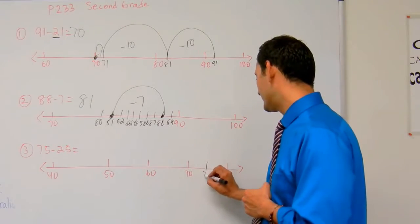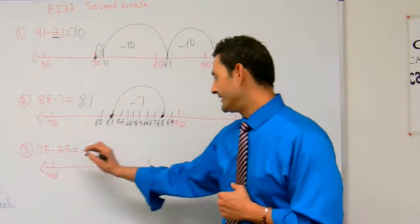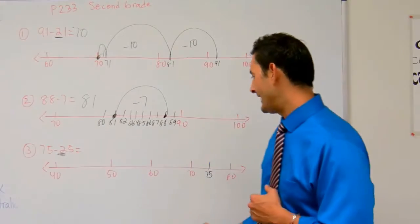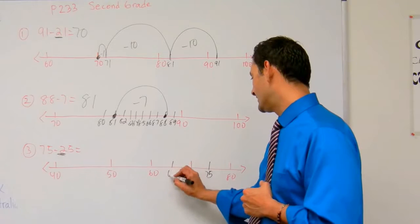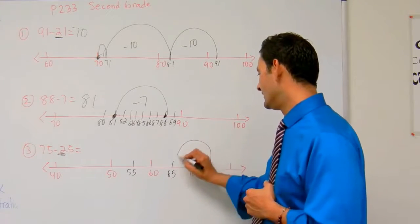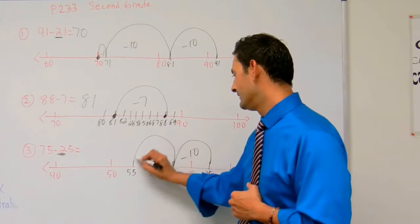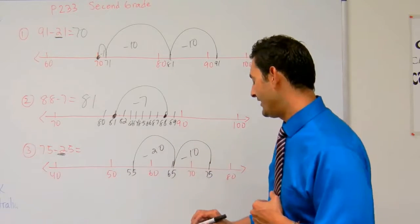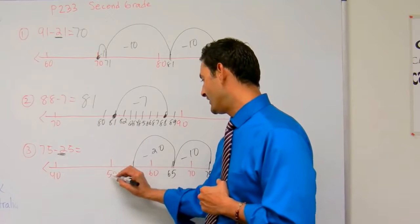Here we have 75, probably in the middle there. My knowledge of place value says I have to go back 20, so I'm going to do 10 there at 65, and 55. I'm going to go minus 10, minus 20 there, and then I have to do 5.